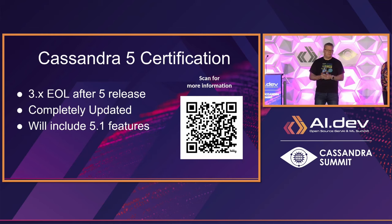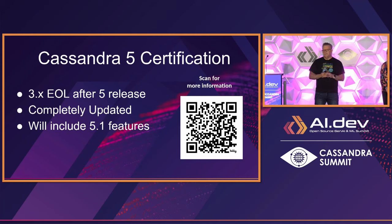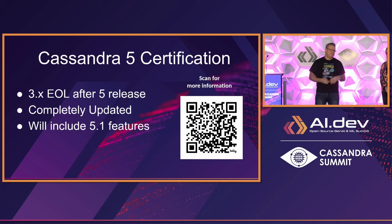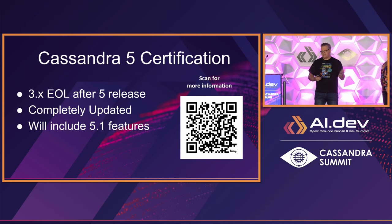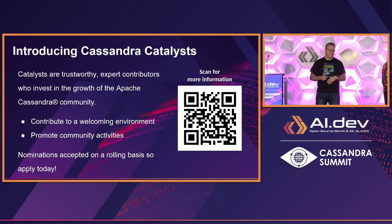Another thing to bring up: Cassandra 5 causes the Cassandra 3.x branch to go into EOL. We announced this last year or earlier this year, but part of that is the certifications — which are all on 3.0 that DataStax provides — will also be invalidated. So there are new certifications available as well. You can follow the QR code. It's completely updated and includes even ACID transactions.